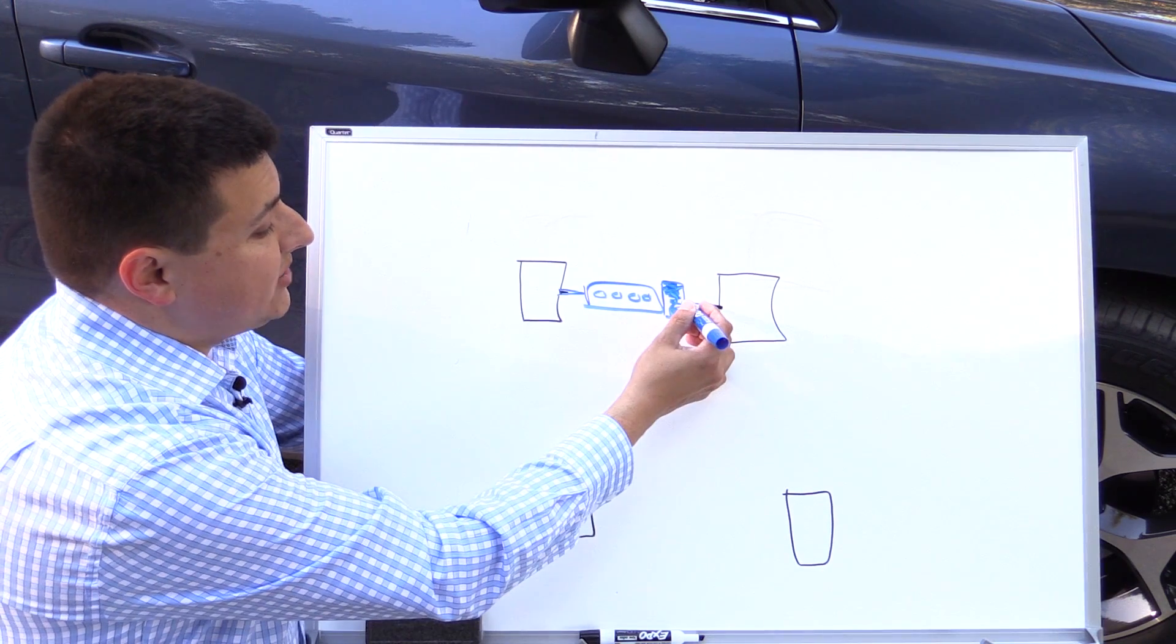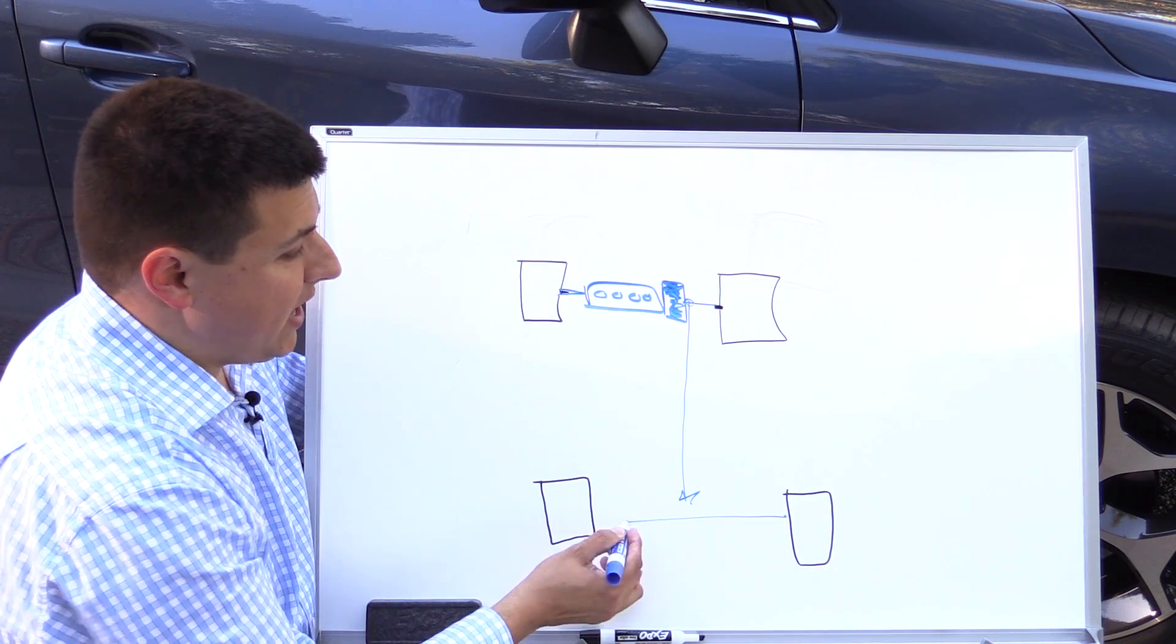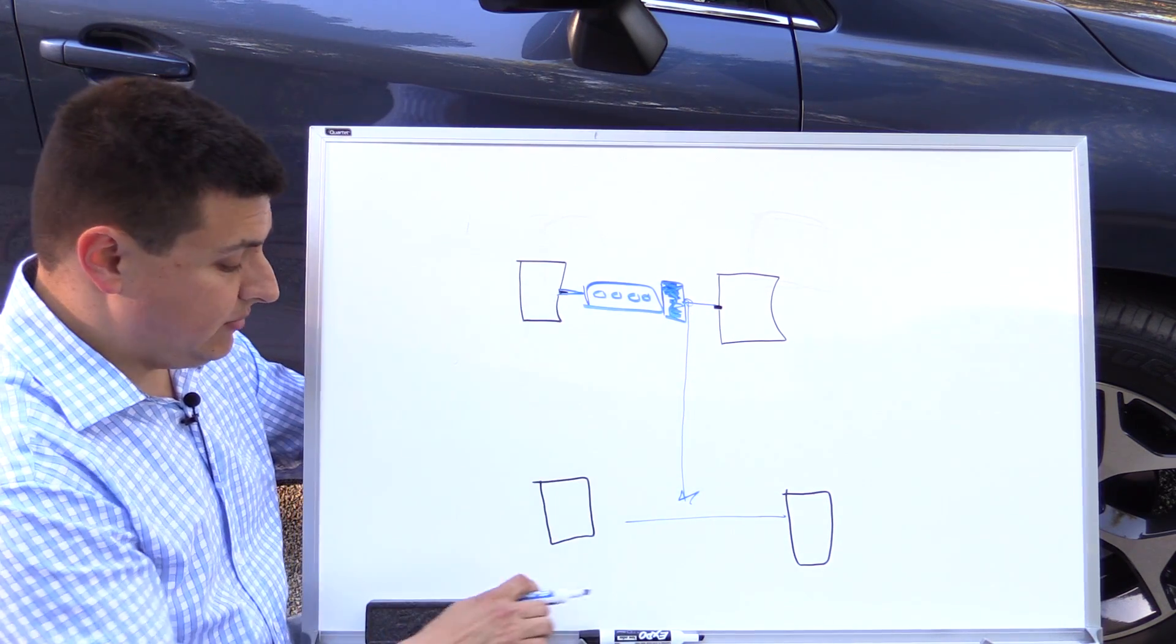Now in order to send power to the rear, we actually take power off right here, we send power to the rear, and that's how we get power to the back of the vehicle. It's very different in a Subaru.